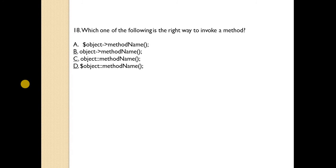Which one of the following is the right way to invoke a method? Answer is A. Dollar object, this is the way to define variable in PHP, followed by arrow, method name and round brackets semicolon.